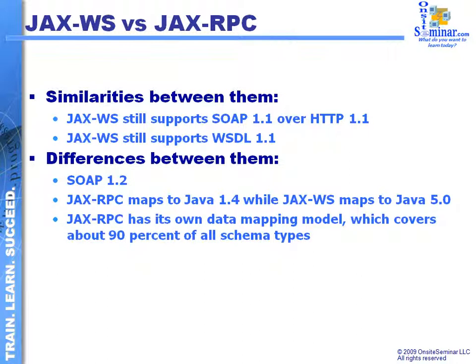In addition, the mapping model is going to be different. JAX-RPC had its own data mapping model that covered many schema types but didn't cover all available schema types — it had its own somewhat proprietary model. With JAX-WS, we use JAXB to map all XML types, removing the proprietary aspects of data mapping that existed in JAX-RPC. This is a significant advantage.